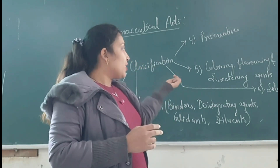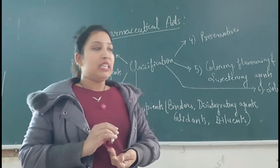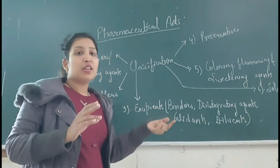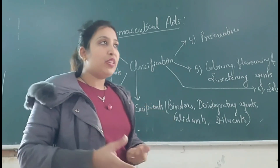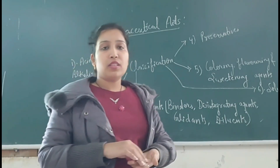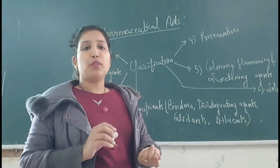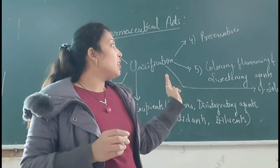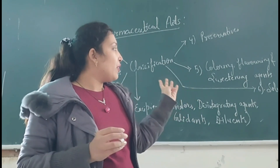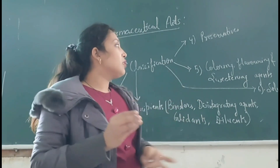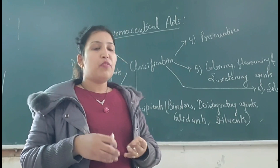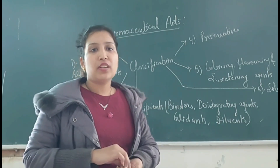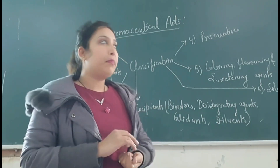The fifth type is coloring, flavoring, and sweetening agents. Coloring agents give color to the product. Flavoring agents give some flavor to the product, for example orange syrup and pineapple syrup.